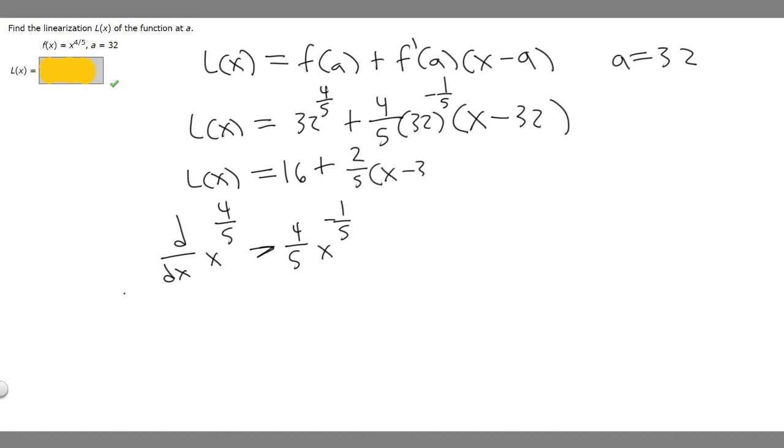Then we're multiplying by x minus 32, so we've got to multiply it out. So we have 2/5 times x, and then 2/5 times minus 32 is going to be minus 12.8.